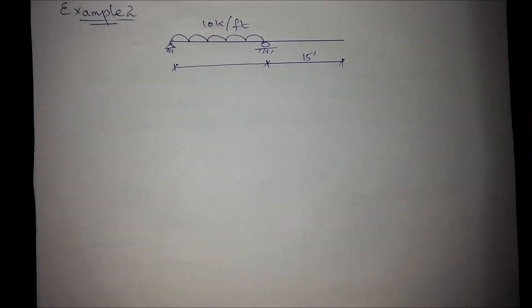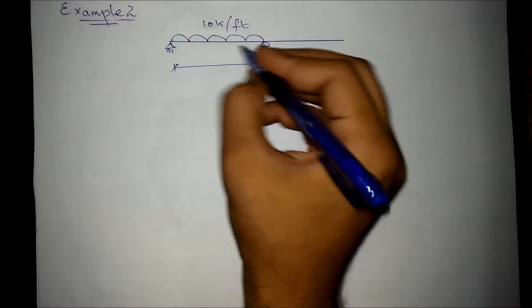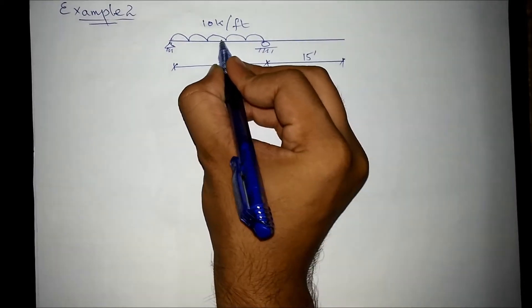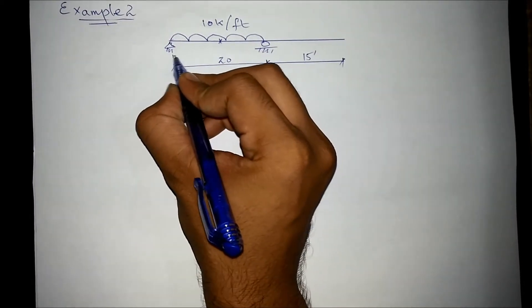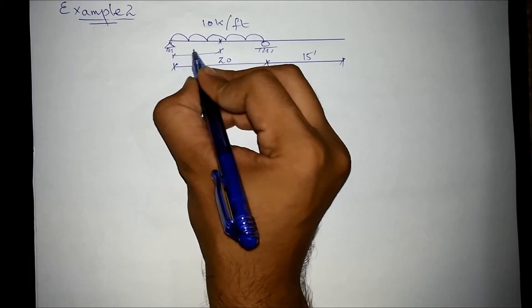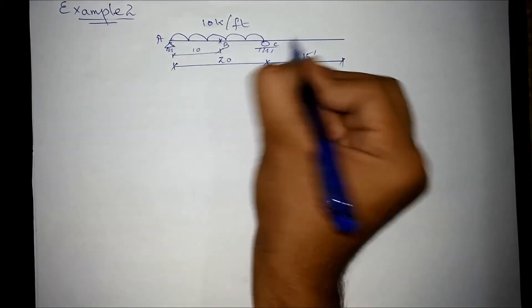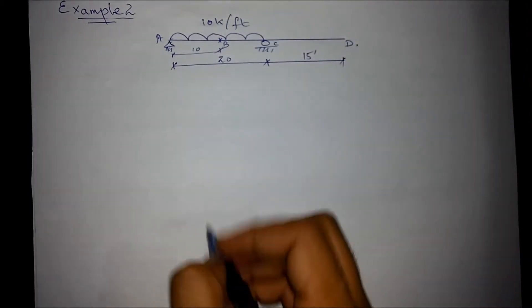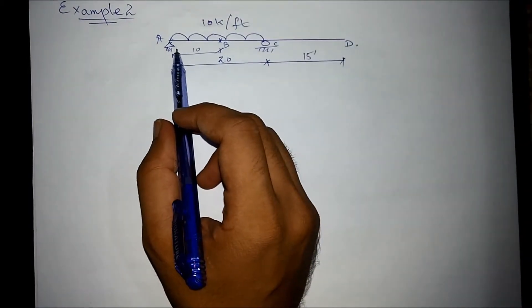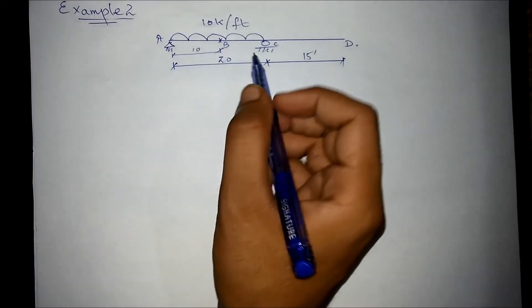Welcome to the second example of solving the beam for deflection by double integration method. Right now we are required to find out the deflection of the beam at this point. Let's call this as point B. That has value of x as 10 feet.